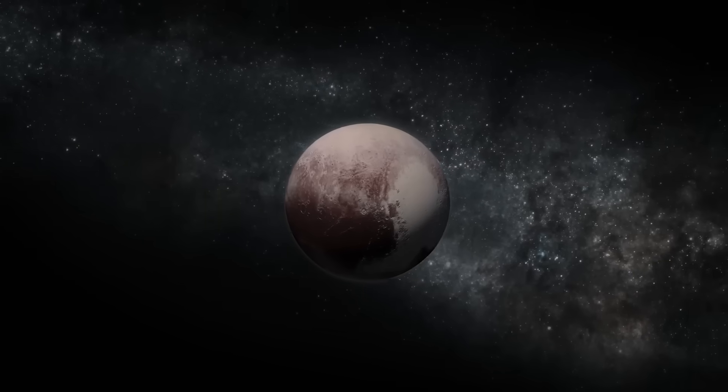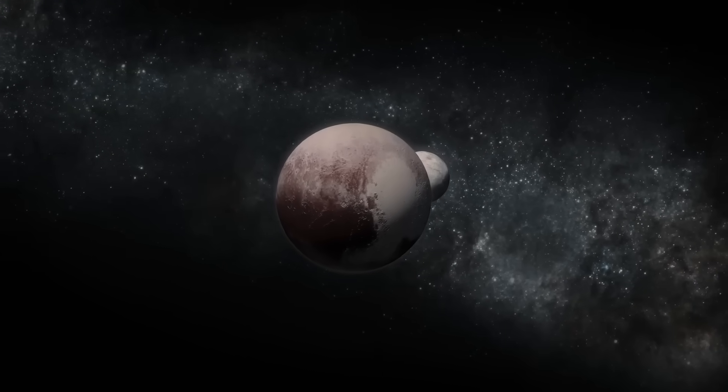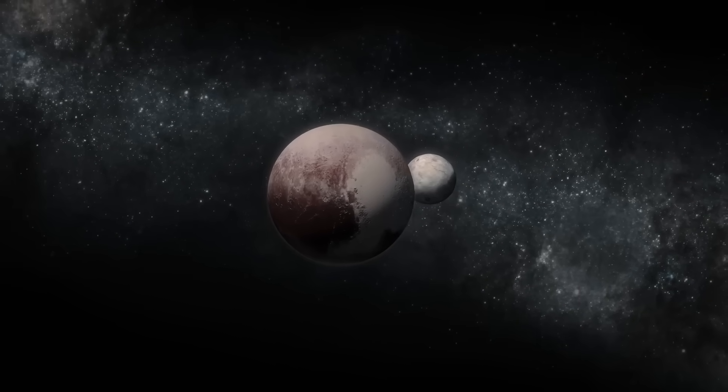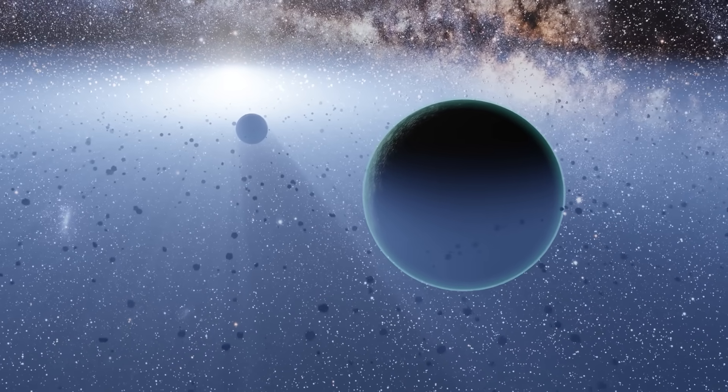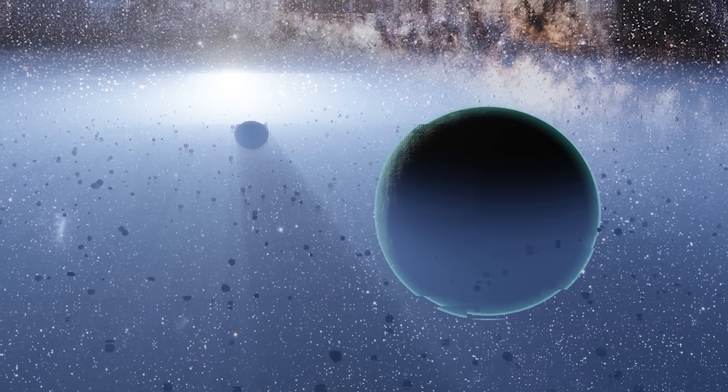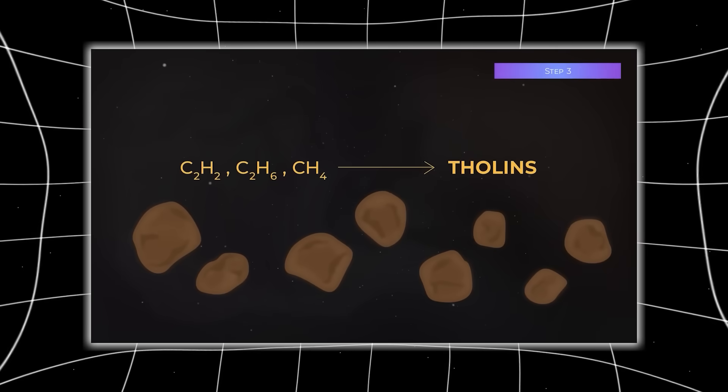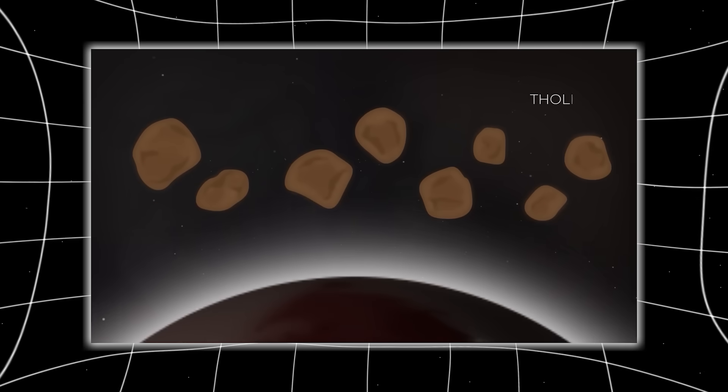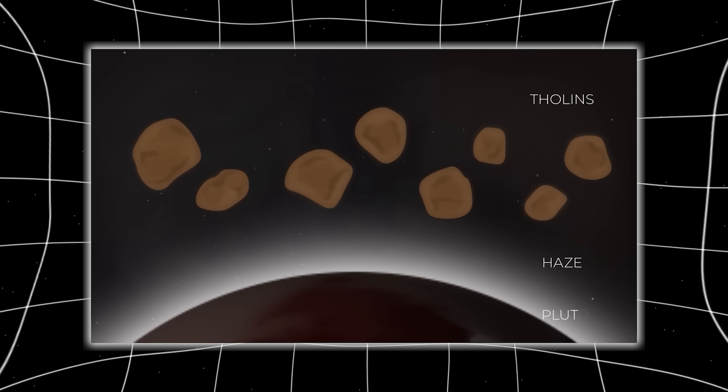This discovery rewrote everything. For decades, planetary scientists believed that gases controlled climate, from carbon dioxide warming Venus to methane shaping the planet. But on Pluto, solid particles, microscopic tar-like compounds called tholins, were running the show.